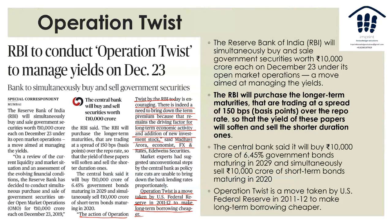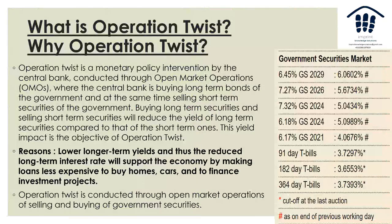Open Market Operations (OMOs) are done where government securities are sold by the RBI — this is normally done on Tuesdays. The basic idea is to make loans less expensive to buy homes, cars, and finance investment projects. That is the basic idea.